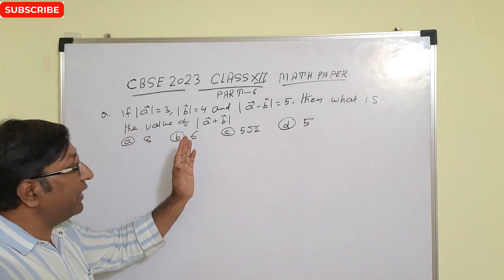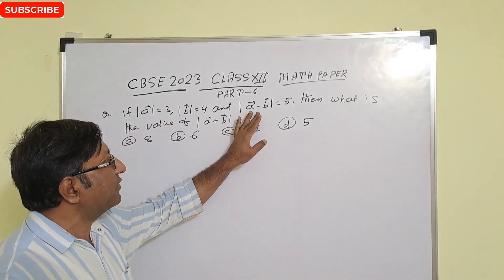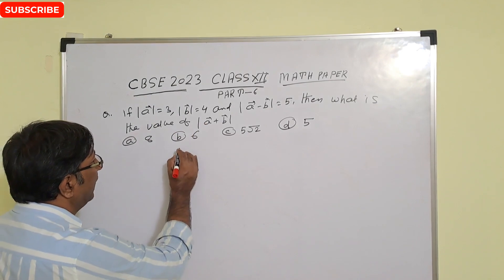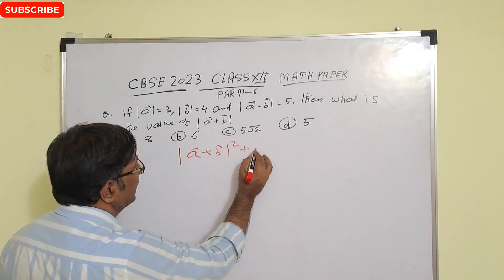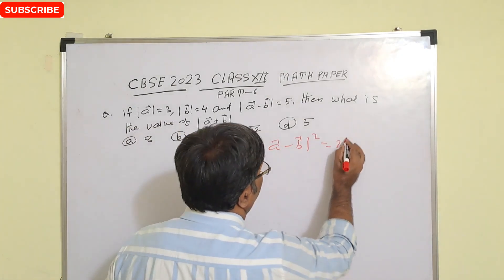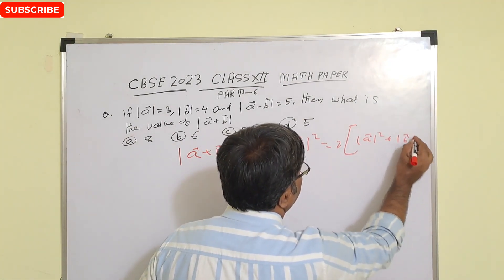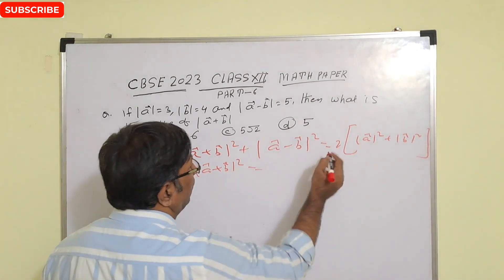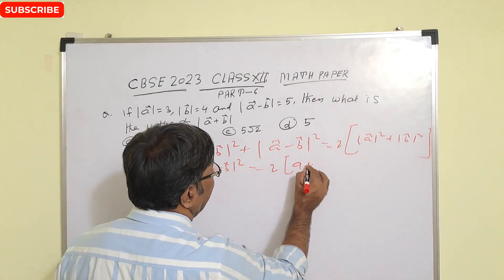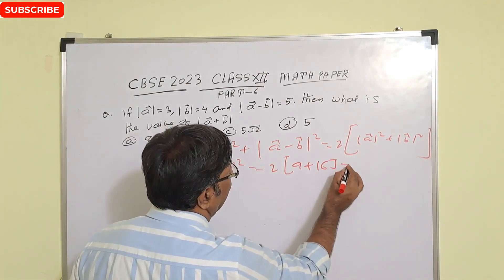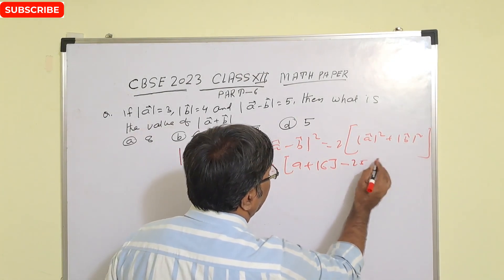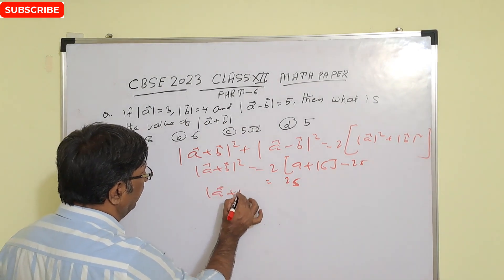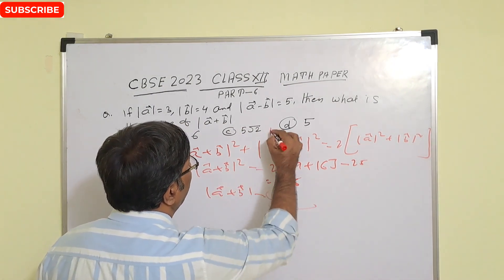Given magnitude of vector a is 3, magnitude of vector b is 4, and magnitude of (a - b) is 5. Find magnitude of (a + b). Using the identity: |a+b|² + |a-b|² = 2(|a|² + |b|²), we get |a+b|² = 2(9 + 16) - 25 = 50 - 25 = 25. Therefore magnitude of (a + b) equals 5. This is the correct answer.